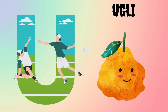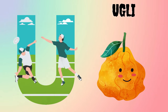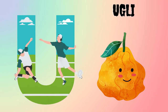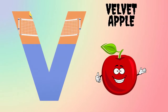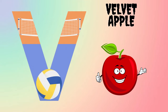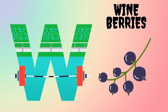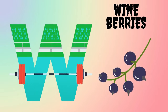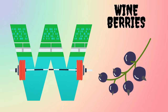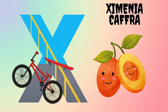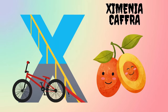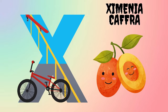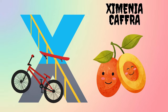U is for Ugli. V is for Velvet Apple. W is for Wineberries. X is for Ximenia Caffra.